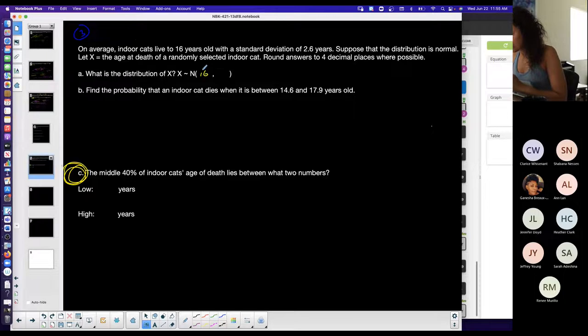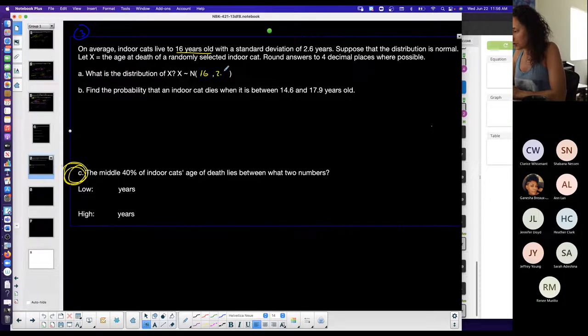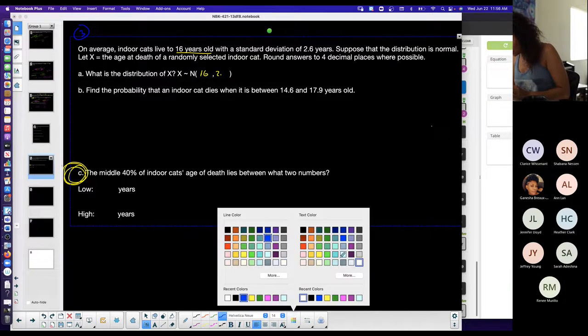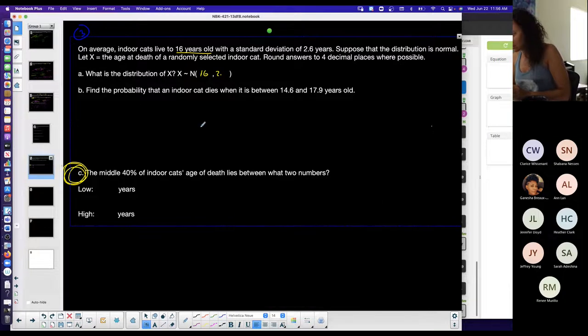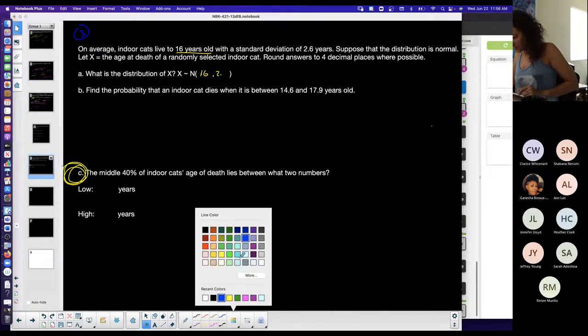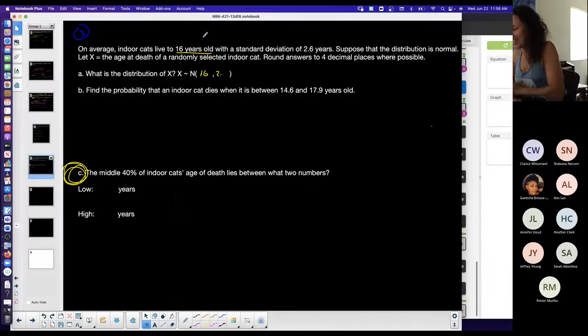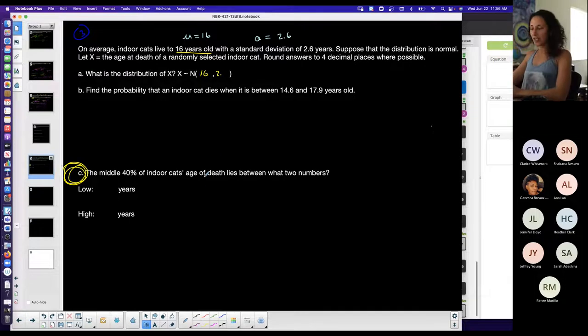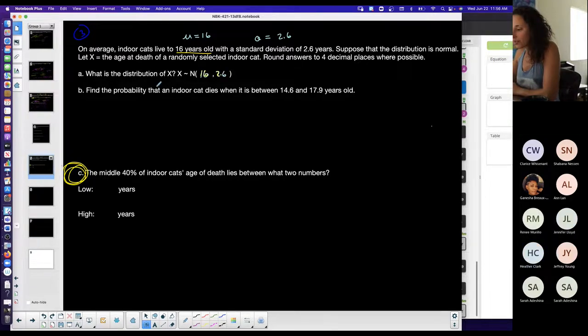On average indoor cats live to 16 years with a standard deviation of 2.6. So I'm going to be using yellow, let me do light blue. My mean is 16 and standard deviation is 2.6, and so that's my distribution N(16, 2.6).